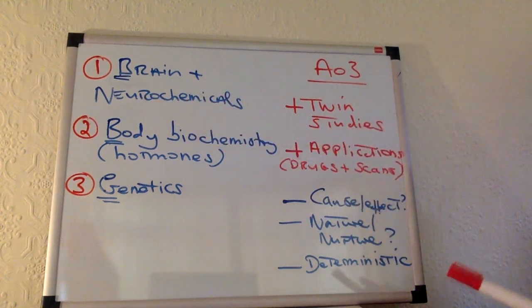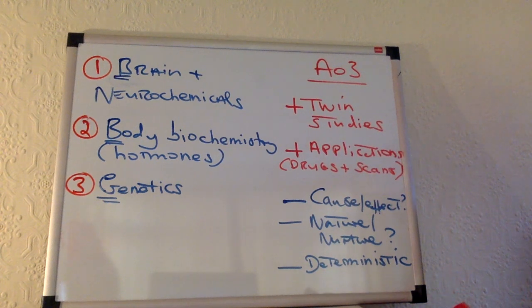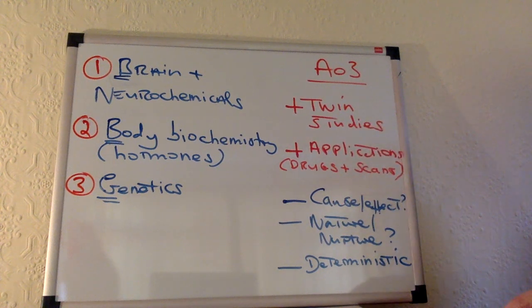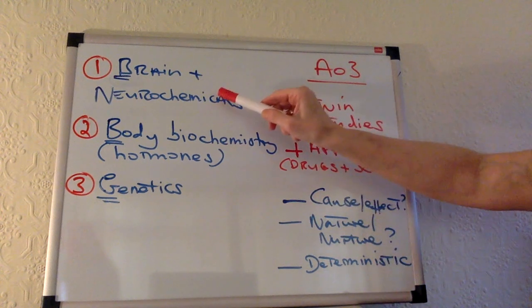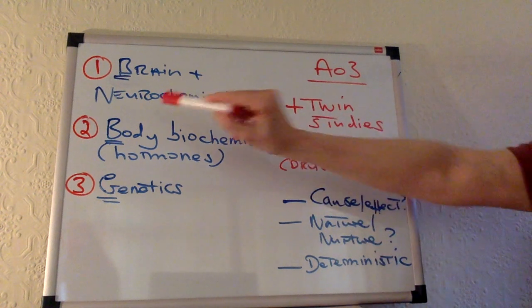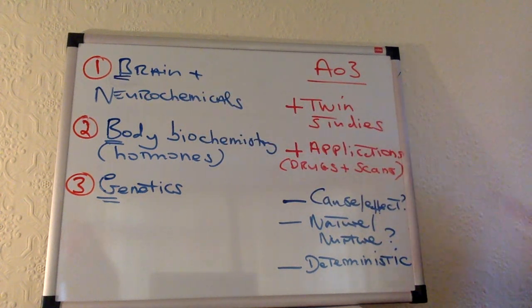Then you want to discuss neurochemicals. Again you want to use things which you have done in your course. So I would imagine, well no for sure everybody's done OCD, depression. So absolutely that's what you want to discuss. Depression, low serotonin that can cause depression. Then you could discuss OCD serotonin. Then you could maybe do schizophrenia, you mention high levels of dopamine. Loads of things that you can discuss to show that our behaviour will be changed by neurochemicals. That's it for two marks or so.